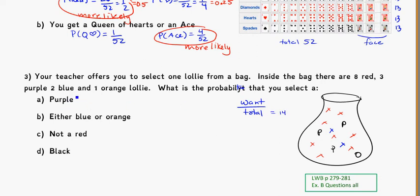And the number of purple lollies out of that entire bag is 3. So, 3 out of 14. If I reach my hand in there, I've got a 3 out of 14 shot at getting my purple lolly.